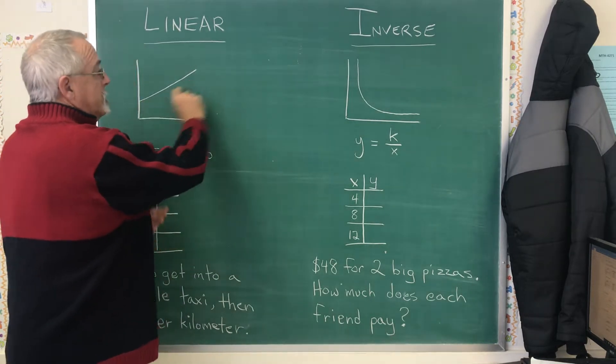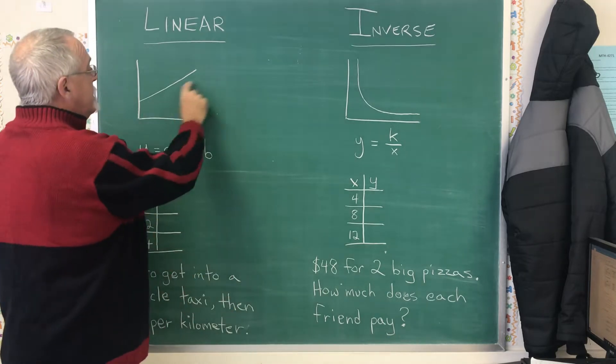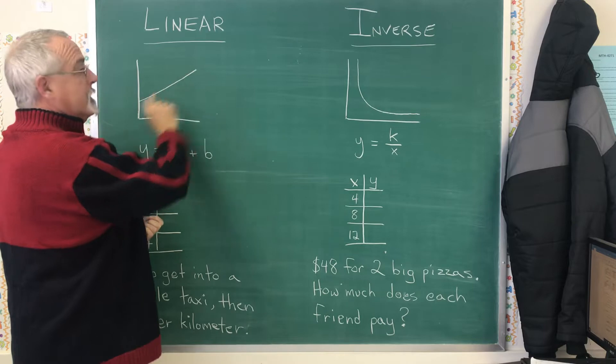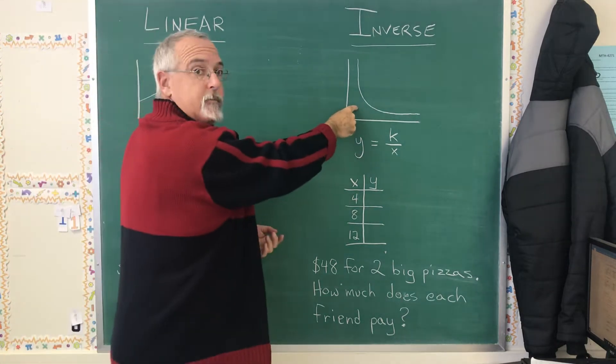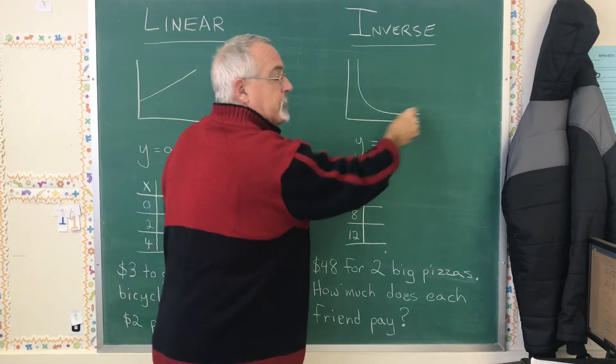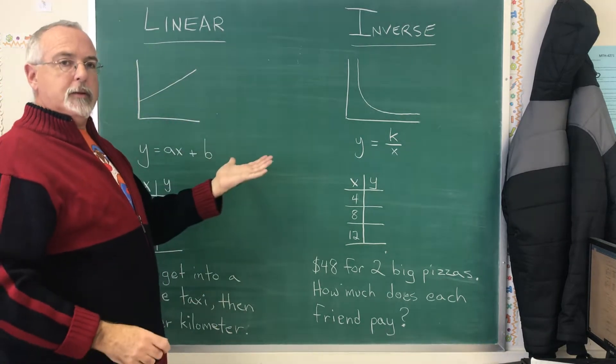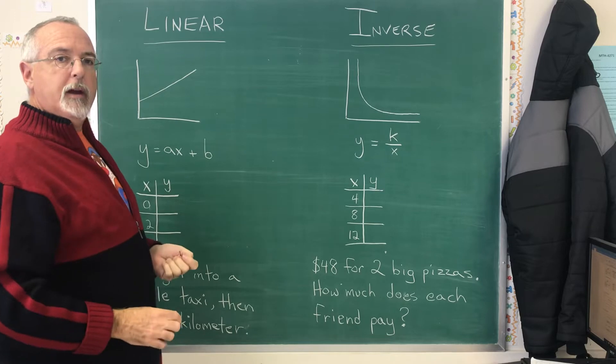A linear situation is a line, a straight line. So we see in the graph, if they give us a graph, it's quite easy to see that this looks like a line and this doesn't. Inverse always takes a shape that looks like this. So at a glance, a graph really helps us to know which type of situation we have.